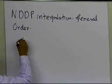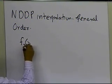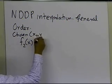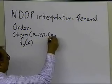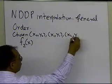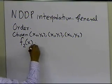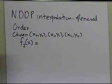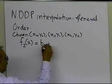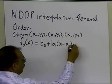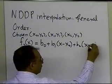If you remember, we had chosen three data points: x0, y0; x1, y1; and x2, y2. We said that we would be able to conduct Newton's Divided Difference Polynomial interpolation and find a second-order polynomial using NDDP. It turns out that the form assumed for the second-order polynomial is of this type.